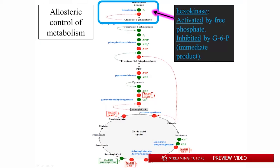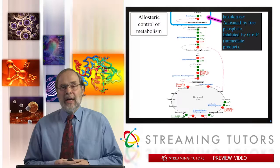Let's start with the first step in glycolysis: hexokinase. It's activated by free phosphate. There's not a lot of free phosphate in biological systems other than the phosphate that is released by the exergonic hydrolysis of ATP in the course of doing things like muscle contraction or any other energy-requiring process.